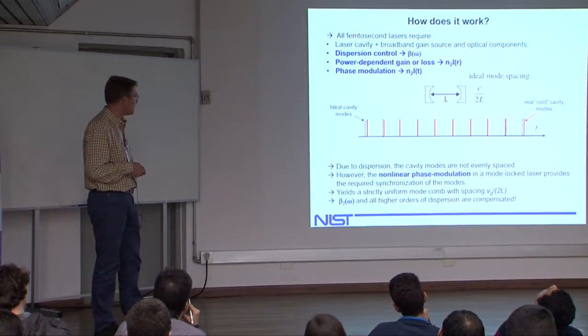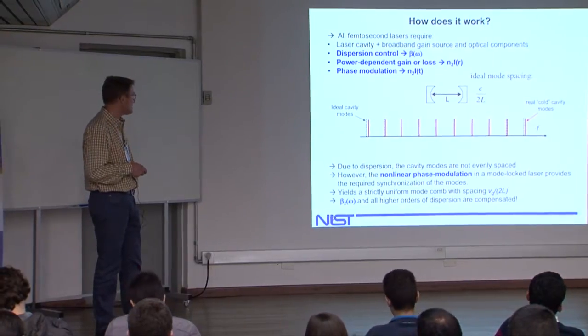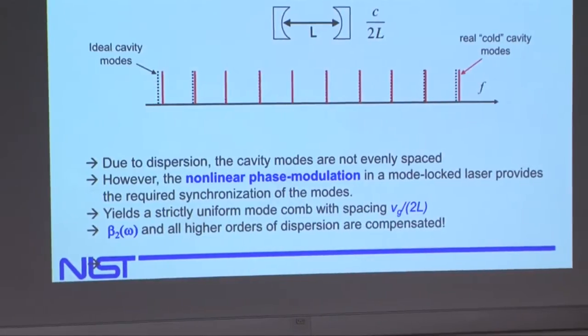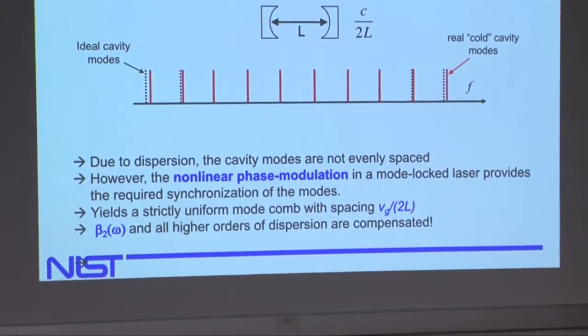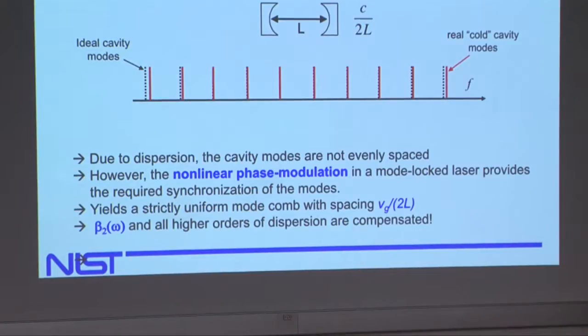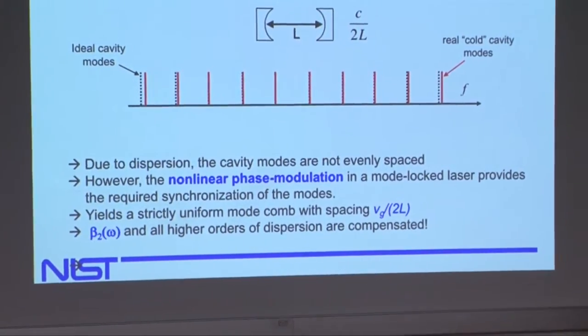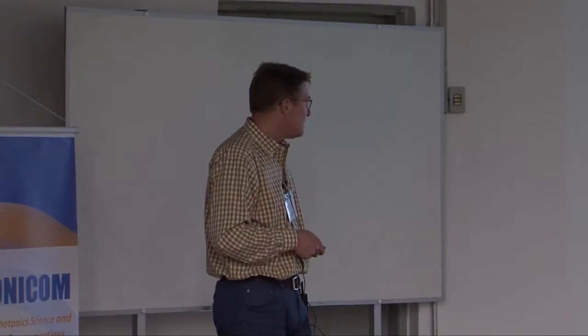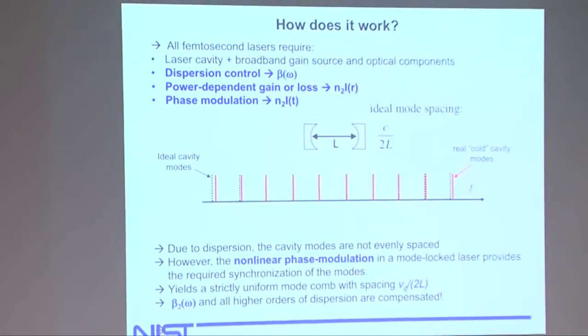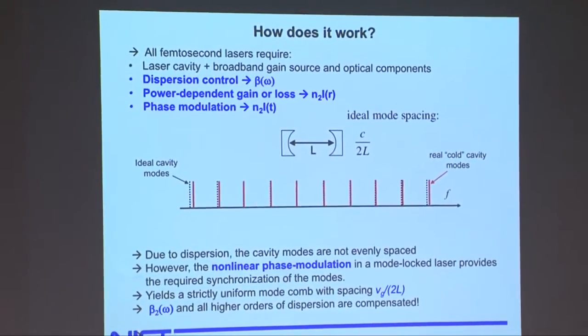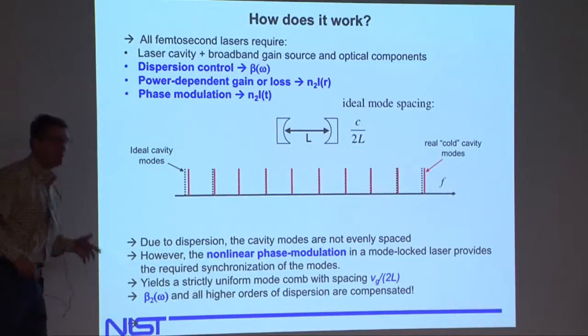So, so here I just note what I said in words. Due to dispersion, cavity modes are not evenly spaced. However, this phase modulation can provide the required synchronization of the modes. When the laser is operating, this phase modulation can counteract the dispersion at some level. And, and in fact, that is a soliton-like effect in this cavity. You have dispersion in the cavity that's tending to push the, the pulse, stretch the pulse apart. The red is going ahead of the blue, for example. Then the, the non-linear phase modulation can pull the colors back together. This yields in the end a strictly uniform comb that's spaced by, not C, but the group velocity of the light, the average group velocity of light, divided by twice the length.